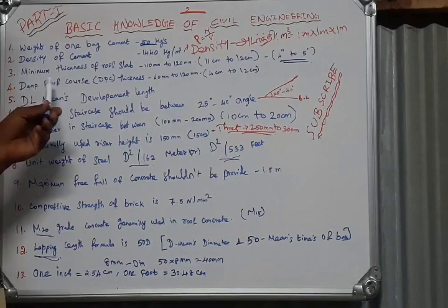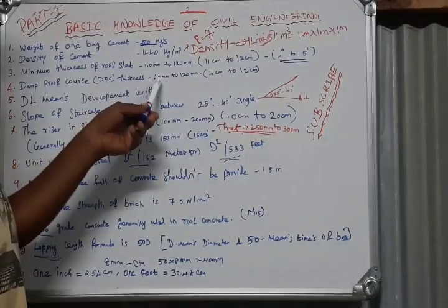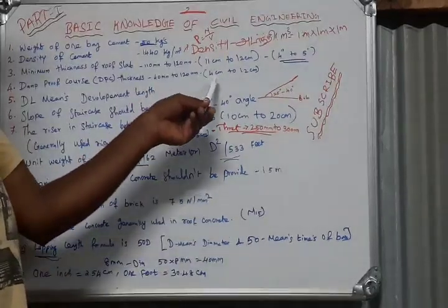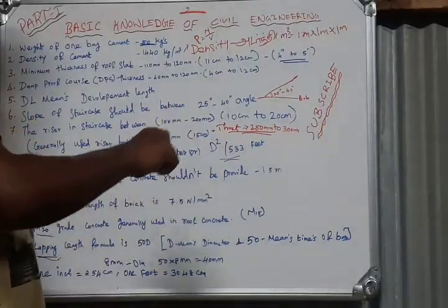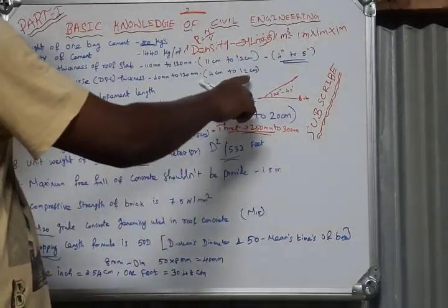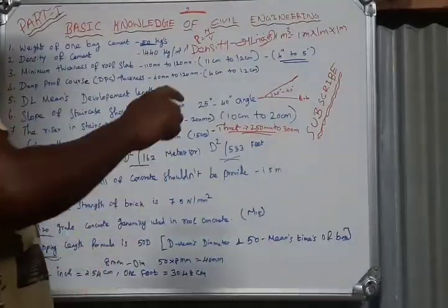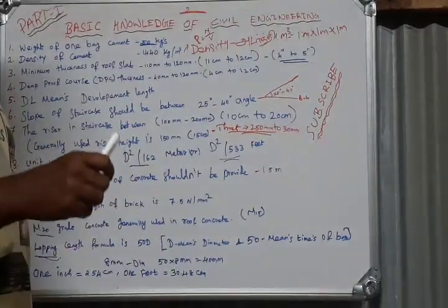DPC, damp proof course thickness: minimum 40 mm, maximum 120 mm. The centimeters is 4-12 centimeters. 4 centimeters to 8 centimeters, that is 12 centimeters for beam.